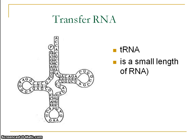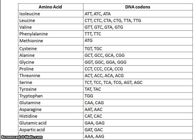Introducing transfer RNA, which has the job of collecting the correct amino acid. It's just a small length of RNA. Here are the amino acids with the DNA codes that identify them.